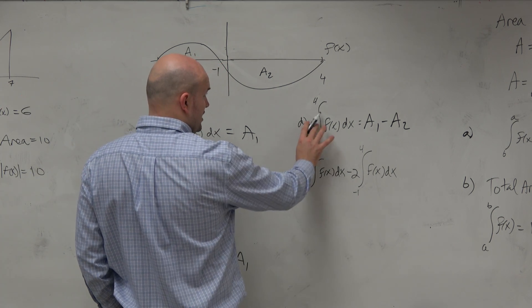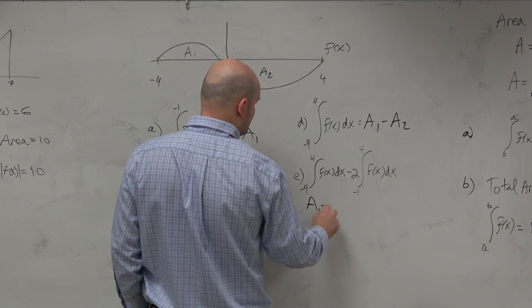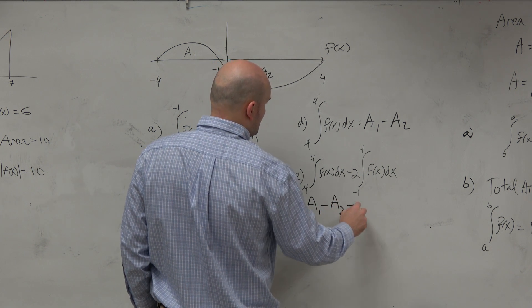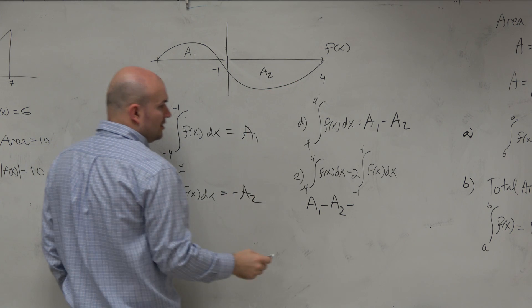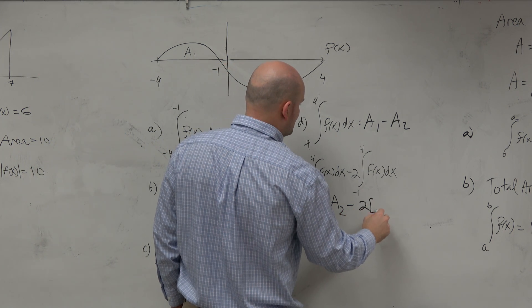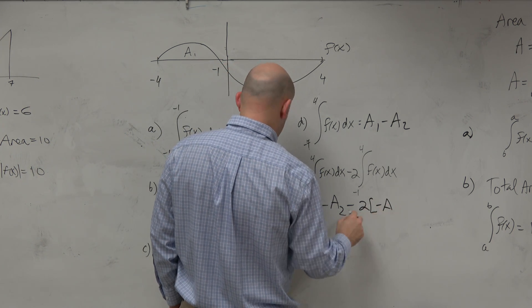Now for part e, we already have our A1 minus A2. Minus from negative 1 to 4, we know that's going to be 2 times negative A2.